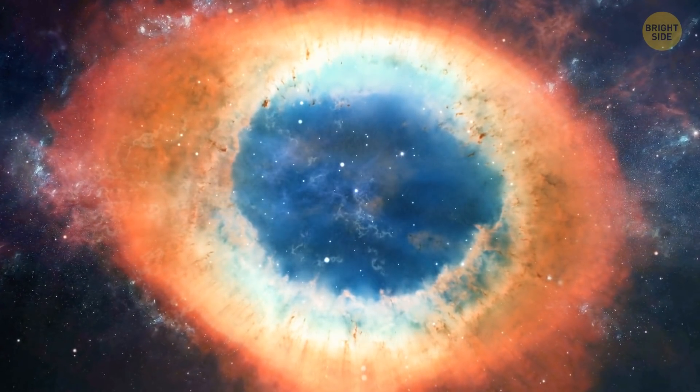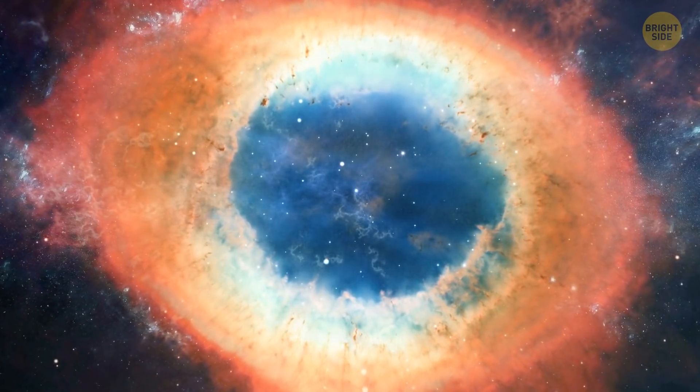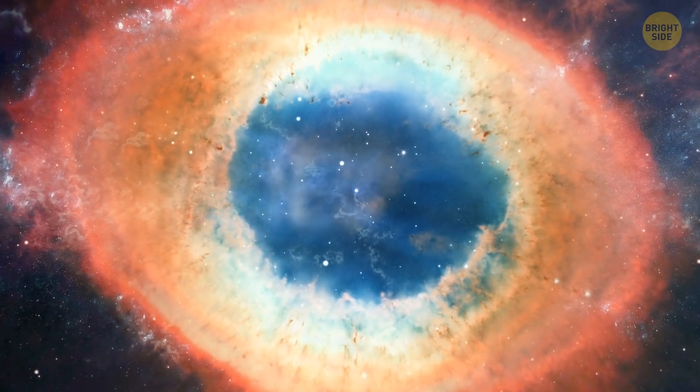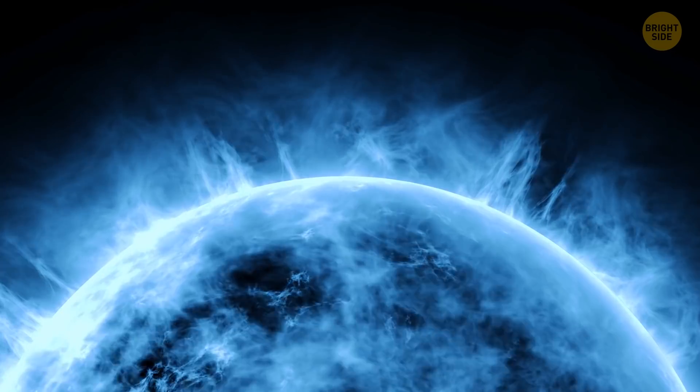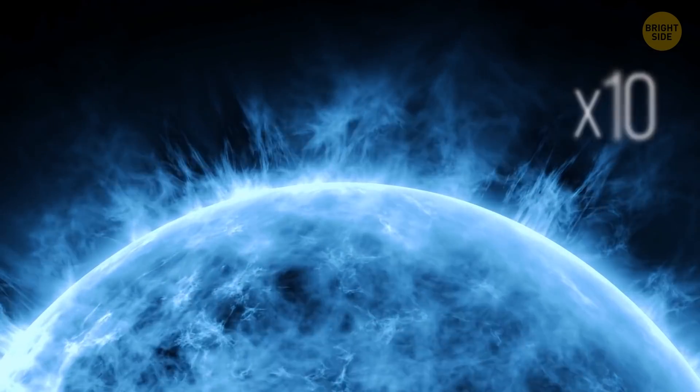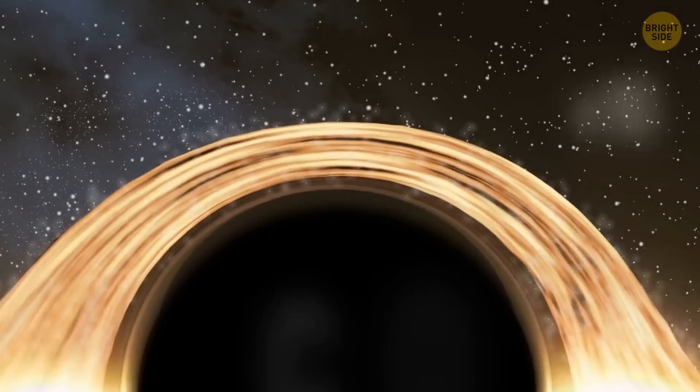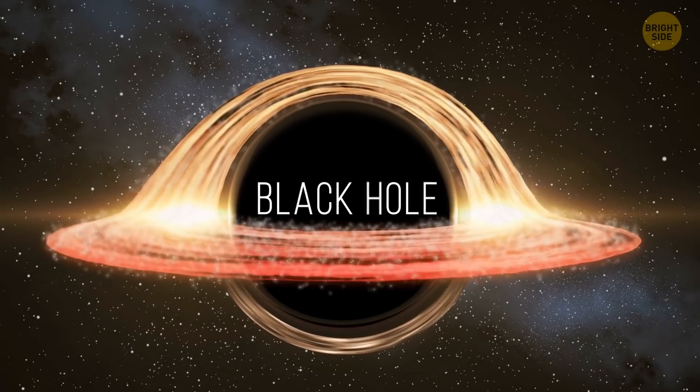What's left behind is an incredibly dense core with a huge cloud of hot gas, called a nebula, expanding around it. If the star has been massive enough, more than 10 times the size of the sun, it's likely to turn into a black hole.